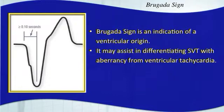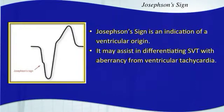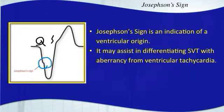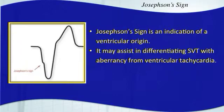You also have Josephson sign. Unlike Brugada sign, Josephson sign is an actual physical finding you see on the EKG — that little notch within the downslope of the QS complex. You'll see that this wave is a QS wave because it has no positive deflection. On the very first part of the intrinsicoid deflection, you have that little notch, and that makes it highly suggestive of a ventricular origin.